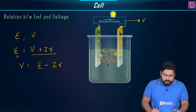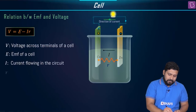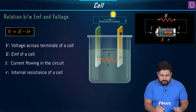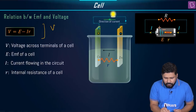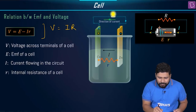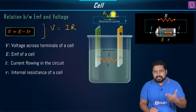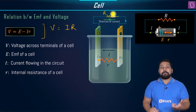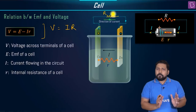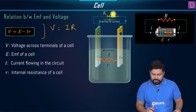Once we have understood this, we need to star-mark one very important formula: V = E − Ir. The value of V will also be equal to I×R, because R is the external resistance. So capital R is the external resistance and small r is the internal resistance.